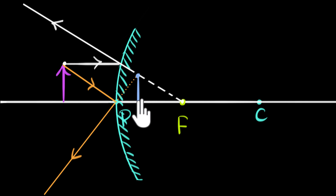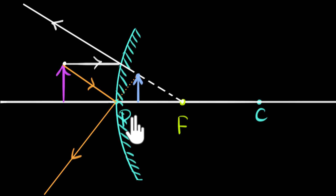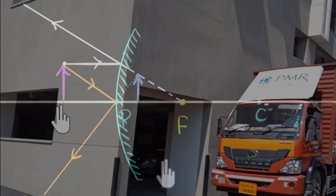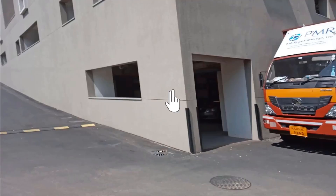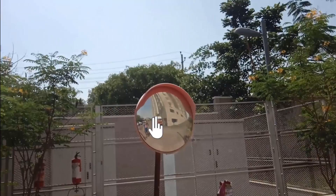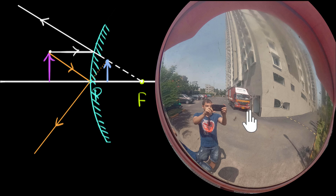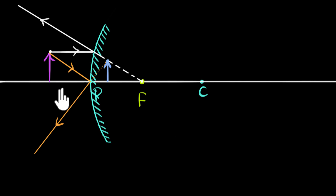Regardless of where you place the object, a convex mirror always produces a virtual, diminished image. Since I didn't have a convex mirror, I went to a parking lot and looked at the image of a parked truck — you can see the truck's image is smaller in size. Because images in convex mirrors are smaller, you can fit more of the scene in, which is why these mirrors are used in parking lots to see around corners. The final key takeaway: never memorize these cases — just draw ray diagrams and you can figure out all the image properties.